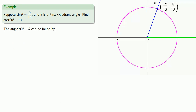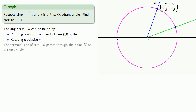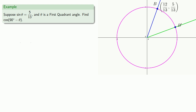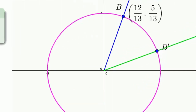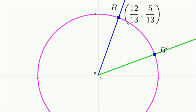The angle 90° - θ can be found by rotating a quarter turn counterclockwise — that's 90° — and then rotating clockwise by θ. The terminal side of 90° - θ will pass through the point B' on the unit circle. Another useful habit in trigonometry is to look for the right triangle. One right triangle is the one that gave us sin(θ) = 5/13. This other angle gives us two right triangles: the obvious one, and a second right triangle that will be the important one.